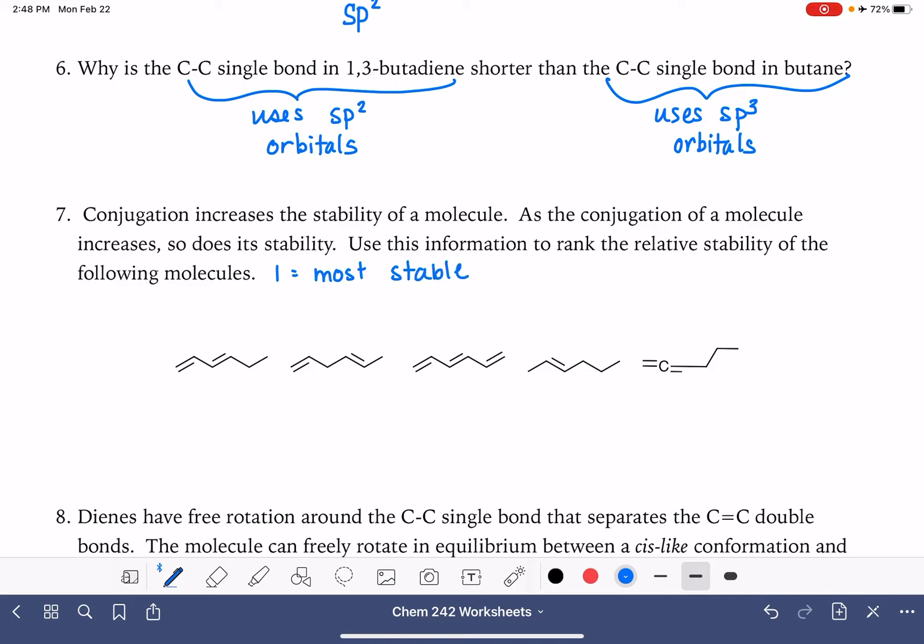So we've got on this problem, we've got two molecules with conjugated double bonds. A conjugated double bond is double bonds that are separated by only one single bond. And the more conjugation we have, the better. So this molecule, which has three conjugated double bonds, is the most stable, and this one with two conjugated double bonds is the next most stable.